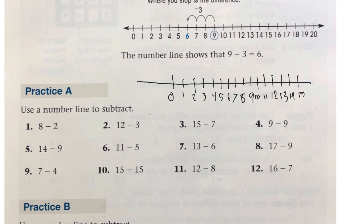So for number 1, 8 minus 2. So here's 8. And then we go to 1, 2. So the number is 6. So 8 minus 2 is 6. So that's how we can make a subtraction using a number line.